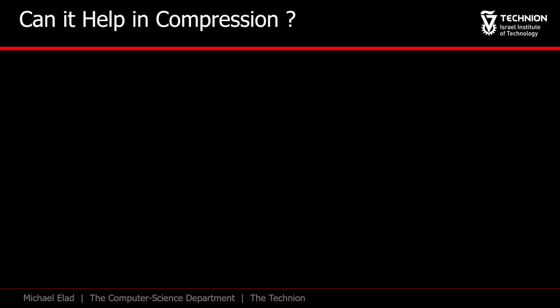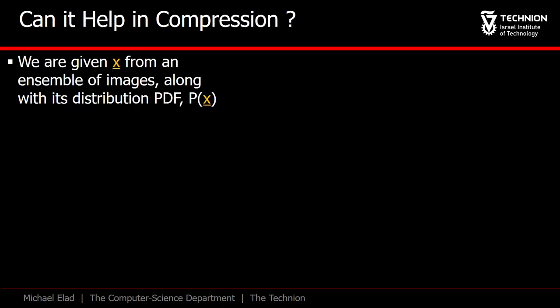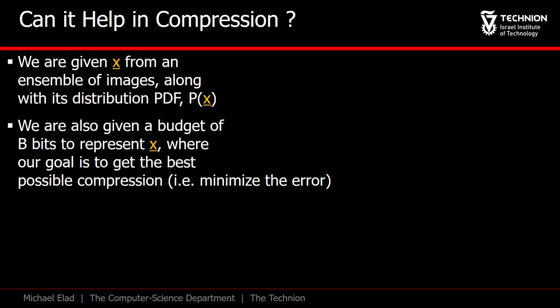Great, what about compression? Is there any role for P of x in compressing images? Again, let's start by defining the problem. We have a budget of b bits to compress images x, emerging from the distribution P of x. And our goal is to do this while getting the smallest possible compression error.